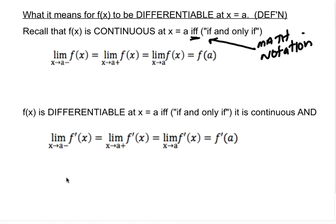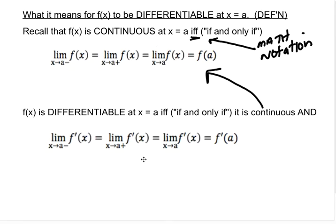Differentiability is basically the exact same definition, except the function has to meet continuity already, and then it's the same rules but for the derivative. So the left-sided limit of f prime equals the right-sided limit of f prime equals the double-sided limit of f prime equals f prime at that actual point a. If a function is differentiable at all points, that implies continuity, because you can't be differentiable without being continuous first. Differentiability implies continuity.